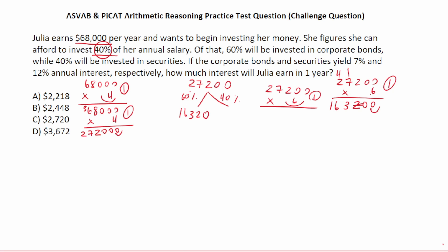Let's figure out how much 40% of 27,200 is. Since we know these add up to 100%, I'm just going to take 27,200 and subtract 16,320 — doing subtraction is a little bit easier than doing math with a decimal. 0 minus 2 we can't do, so we borrow: 10 minus 2 is 8. 1 minus 3 we can't do, so we borrow: 11 minus 3 is 8. 6 minus 6 is 0, and 2 minus 1 is 1. So this is $10,880.